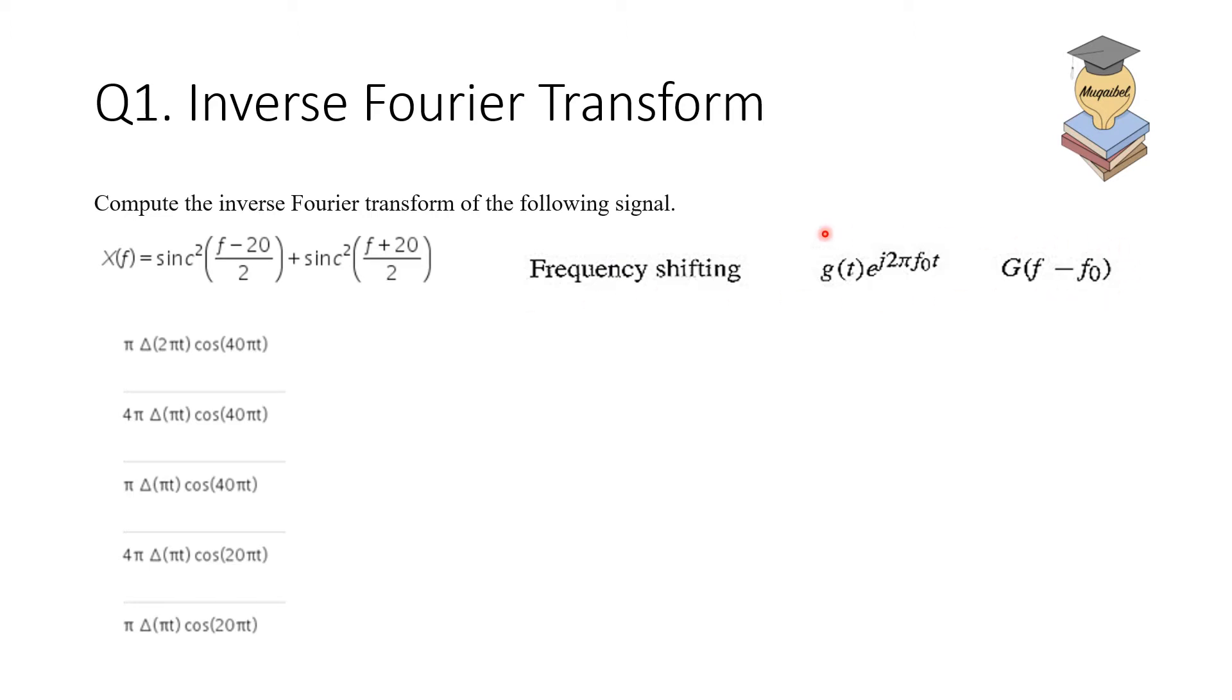I am scanning, I'm getting an image of the Fourier transform shifting property, which says if you multiply a signal by an exponential you get a frequency shift.